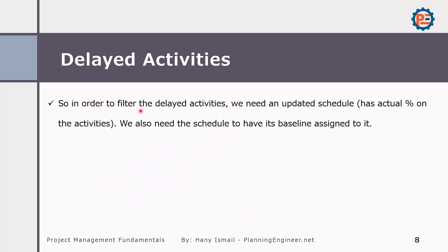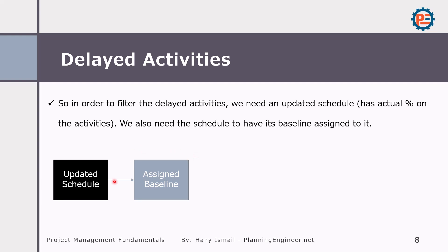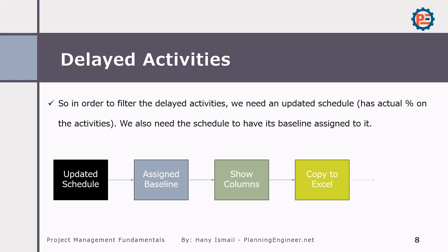In order to filter the delayed activities, we need to update our schedule with actuals, then we can do the steps. We have an updated schedule, we assign a baseline to it, then we show the columns of delays which we are going to copy later into Excel. Then we copy to Excel and apply some filters. Very simple — don't worry. Even if you don't know anything in Primavera, you can still do these steps.